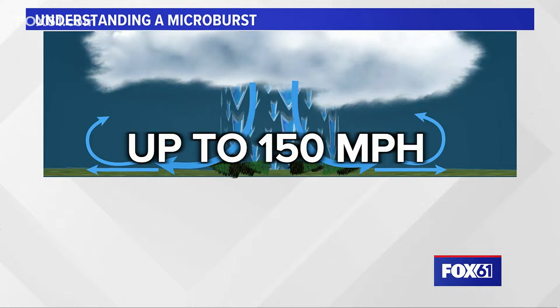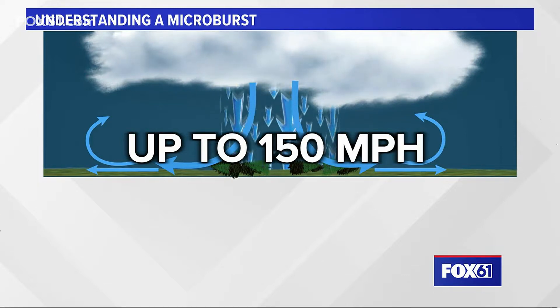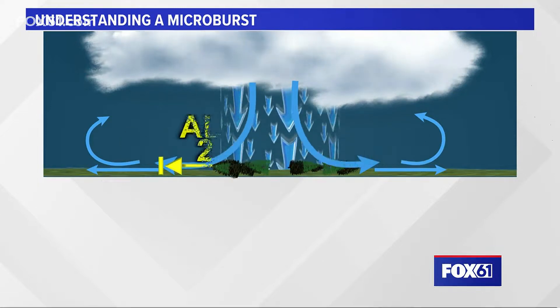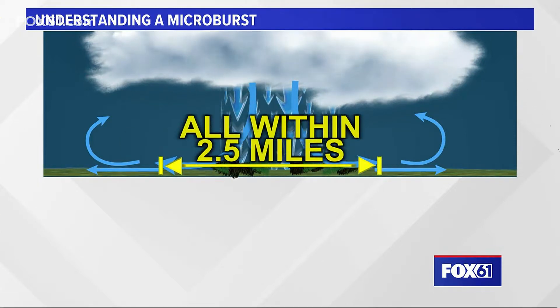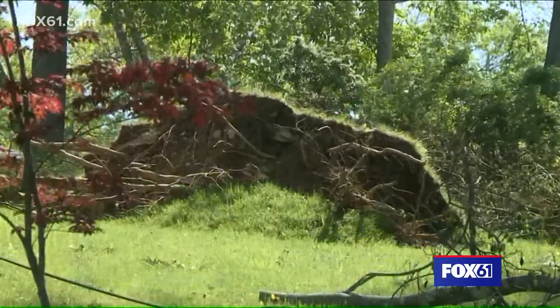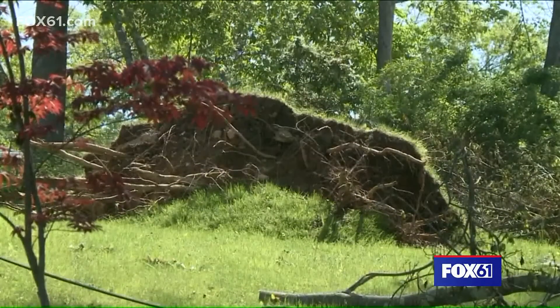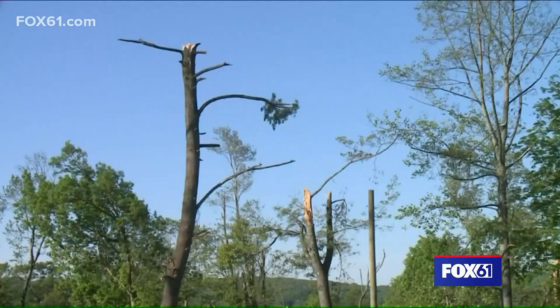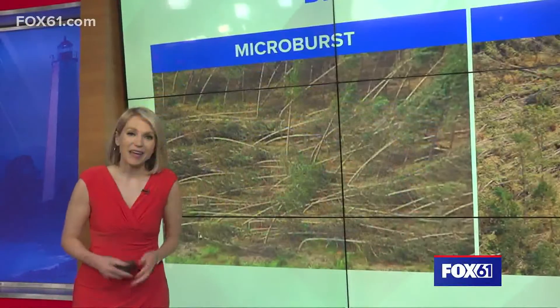A microburst is a downdraft that's less than two and a half miles in scale. A macroburst is even larger. On May 15th, 2018, a three-mile-wide macroburst hit Brookfield.